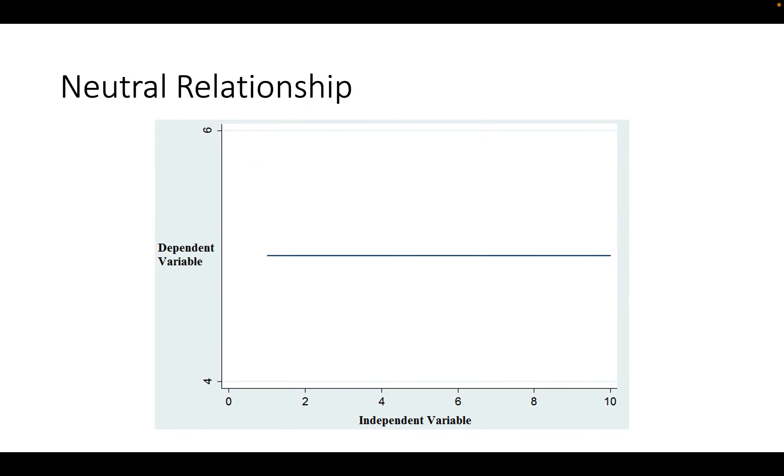Finally, there can be neutral relationships, where no matter what the value of the independent variable is, the value of the dependent variable stays the same. And this can be represented by a horizontal line, perfectly horizontal, and also a perfectly vertical line, which I don't draw here. But you can imagine that for any value of the dependent variable, the independent variable value does not change.